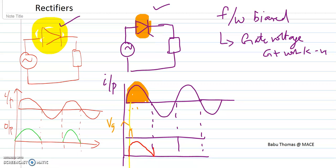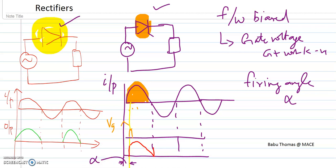So at this instant, we will be defining one term that is known as the firing angle, which is denoted by alpha. Here I will denote that alpha as this one. This is nothing but your alpha. So your firing angle alpha is nothing but the angle between the instant the thyristor would conduct if it were a diode and the instant it is triggered. So if it was a diode, it would have gotten turned on at this instant. But we are having control of the device to make it turn on at any instant of time when it is forward biased — that is this period. So this alpha, it can be varied.